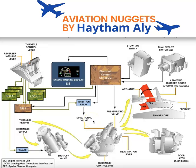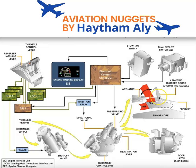Regarding the latches of the thrust reverser system, there are only two independent latching mechanisms — not three. We have a door latch and an actuator latch: one inside the actuator and one on the door. There are four door latches total, which must be released in series first. Then hydraulic fluid goes to the actuator, releases the actuator latch, and allows the thrust reverser to be deployed.